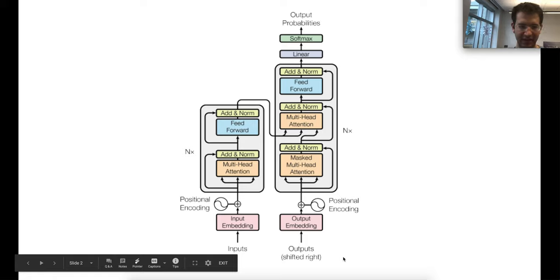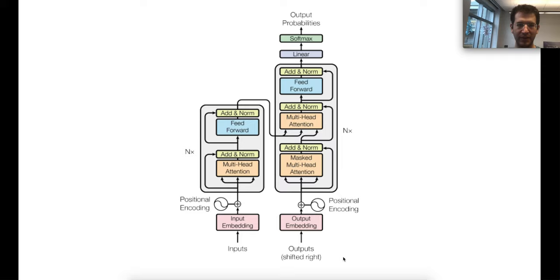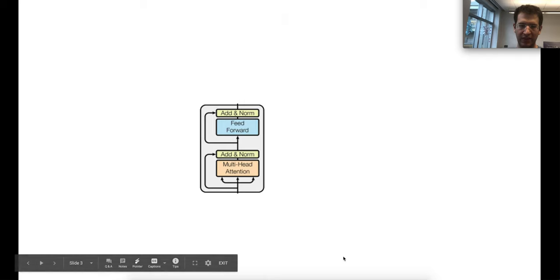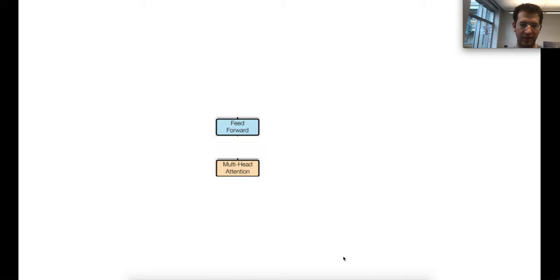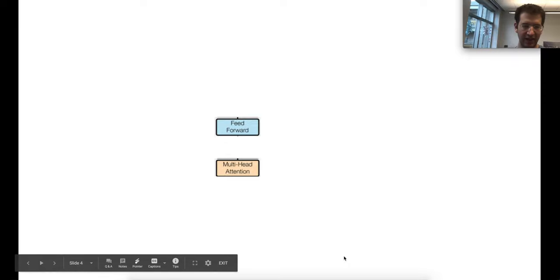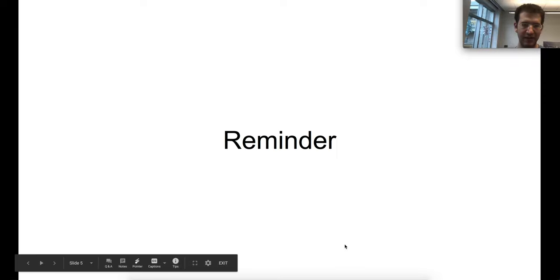In 2017, everybody knows this — in the 'Attention Is All You Need' paper, the transformer model was introduced. If we focus on one transformer layer, we'll see that it's made up of basically two main components: the self-attention sublayer and the feedforward sublayer. I'm going to briefly remind you what each of these sublayers do.